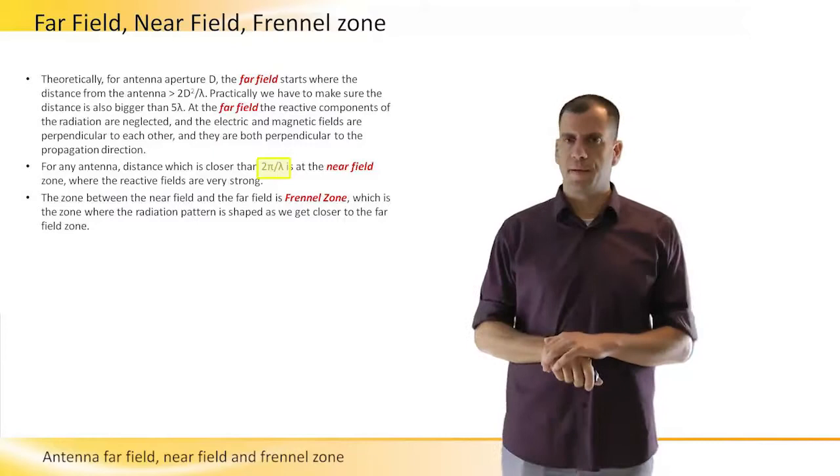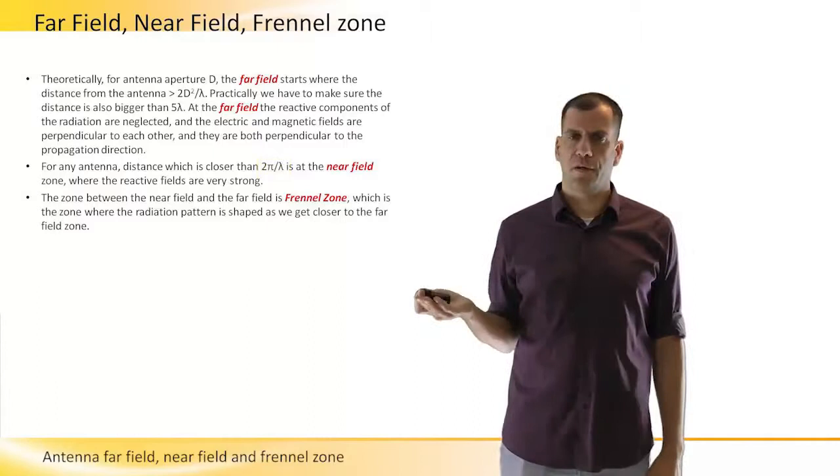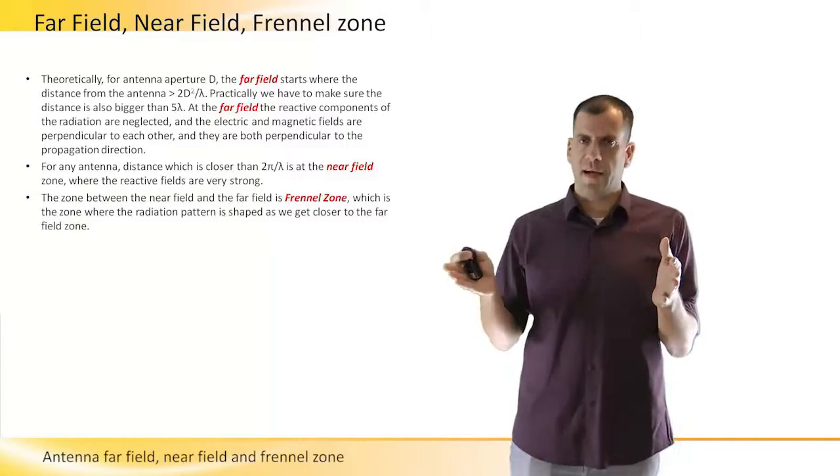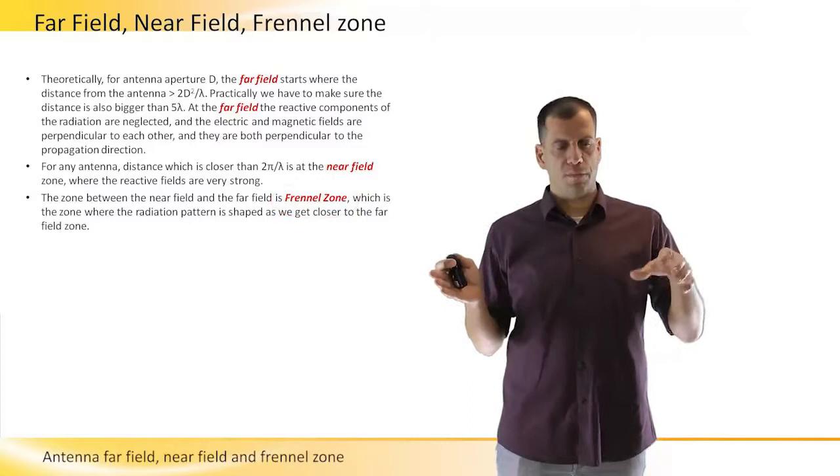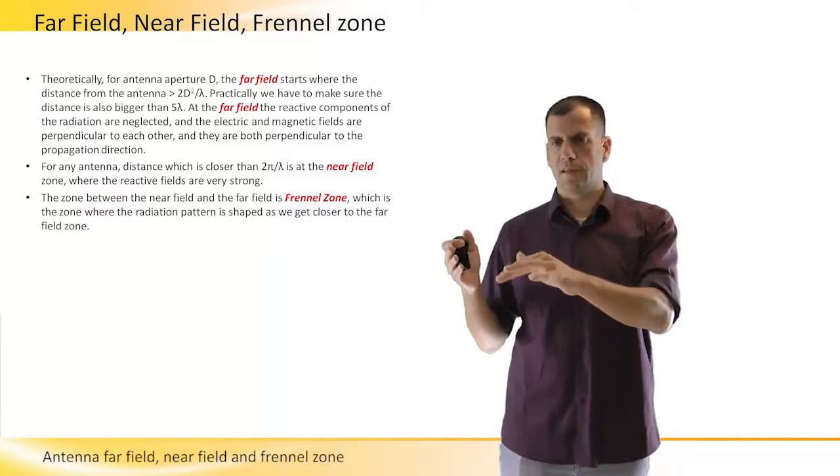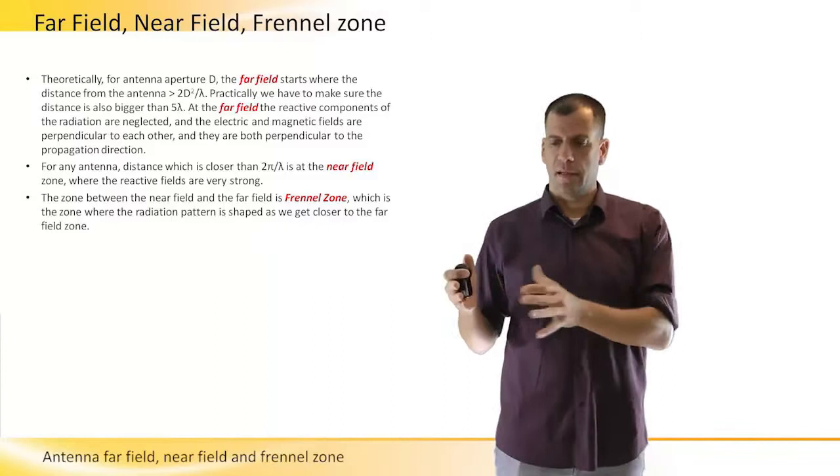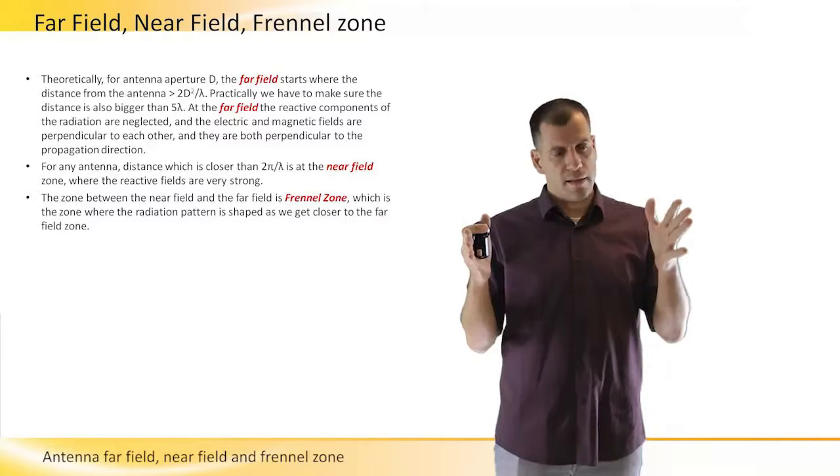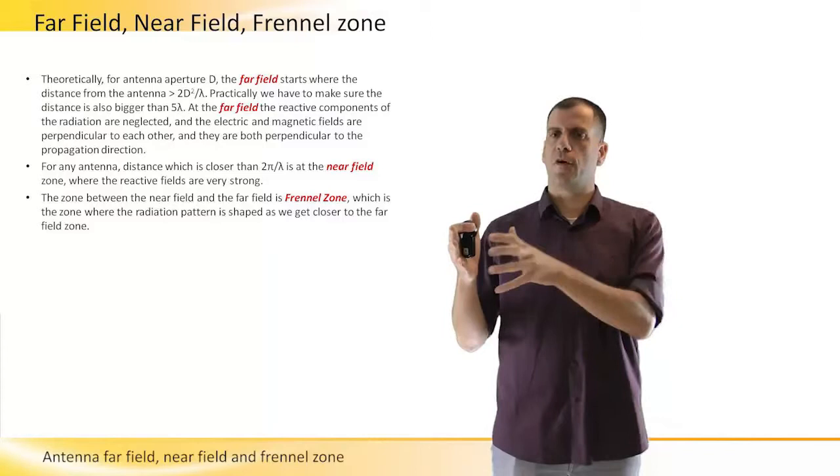And from this range to the far field, we have some distance that is defined as the Fresnel zone. This is the zone where the fields transition from the strong generation area to become the planar wave where the electric field and the magnetic field are perpendicular. All this range from the antenna where fields are shaped to perform like a planar wave - this is the Fresnel zone.